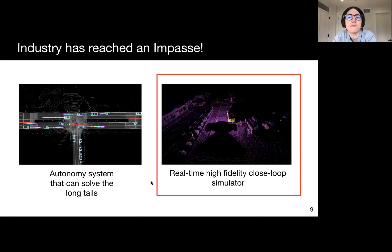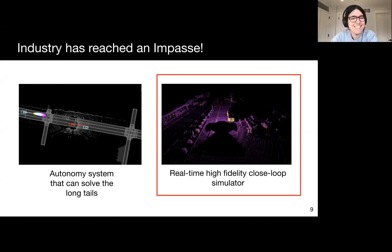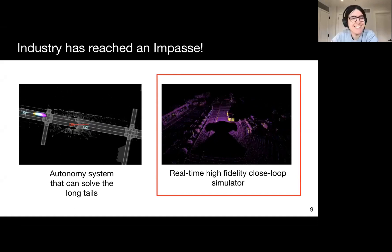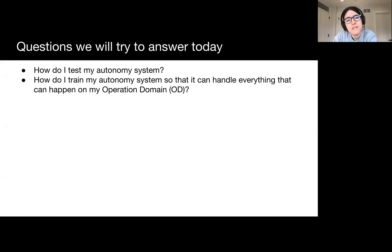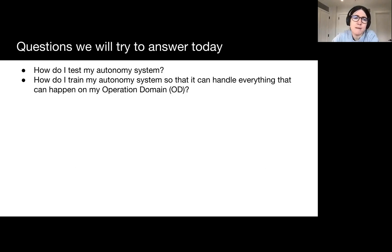Today I'm going to focus on the simulation part. I'm going to try to answer two questions: how can we test the autonomous system, and how can we train it such that we can actually handle everything that might happen in our operation domain? The concept of operation domain is particularly important in self-driving — we shouldn't think of self-driving cars working everywhere at the same time. Instead, this technology will be deployed in small areas where these vehicles actually operate, and then they will expand over time — and that might be many, many years.